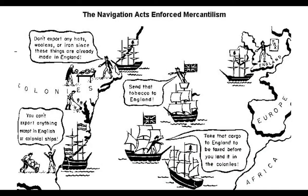This graphic covers things that fell under the Navigation Acts. Don't export any hats, woolens, or iron since these things are already made in England. You can't export anything except in English or colonial ships. Tobacco, on its route elsewhere, had to be sent to England — you can't trade with other countries. And cargo heading to the colonies had to be taken to England to be taxed first. People are not going to want to do that. It's just everything to benefit the mother country.